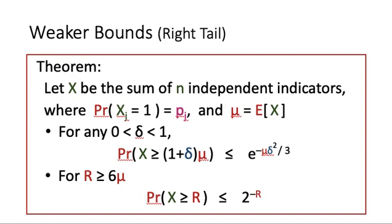Let us take a look at some easier but weaker bounds. We are still looking at the random variable which is the sum of n independent Poisson trials, with the j-th trial succeeding with probability p_j, and the mean value mu equal to the expected value of X.